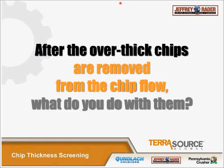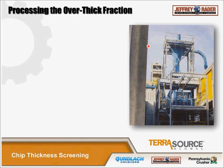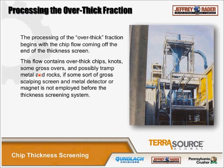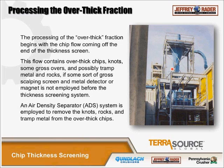To process the overthick fraction, it all begins with what's coming off the end of the bar screen. This flow contains overthick chips, knots, some gross overs, and could include tramp metal and rocks, depending on where in the system you have a scalping screen or what kind of metal detection is employed. The air density separating system is employed to remove those rocks and knots from the chips.